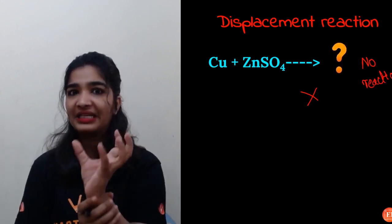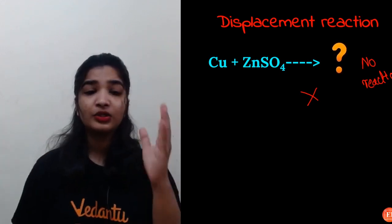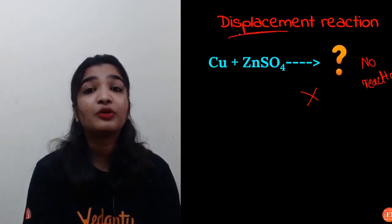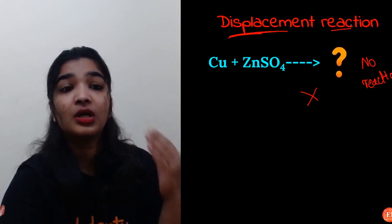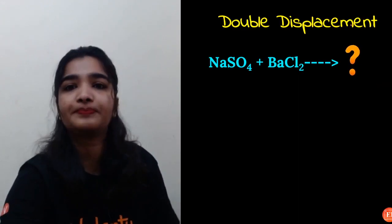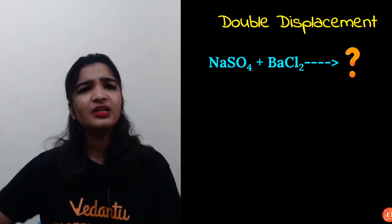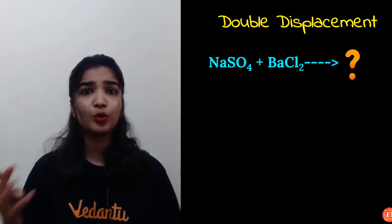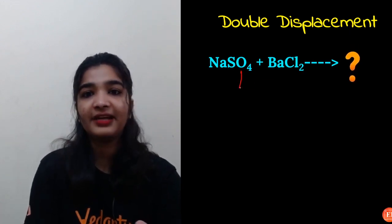To summarize displacement reactions: whenever you have a metal and a metallic salt, it is a displacement reaction. To answer whether it proceeds, check the reactivity series — can this metal displace the other from its solution? Now moving to double displacement reactions — unlike single displacement where one metal replaces another, here you get two compound products.